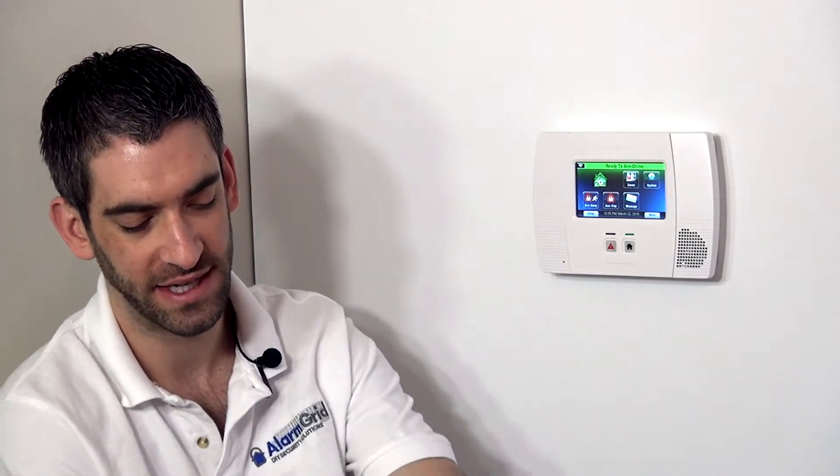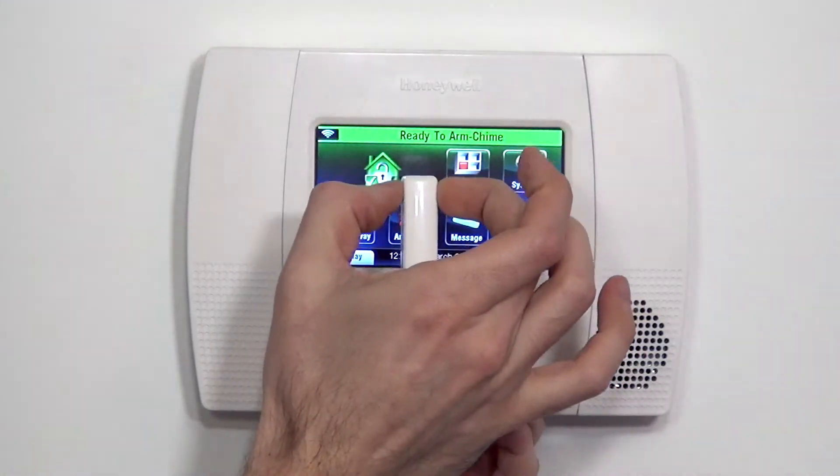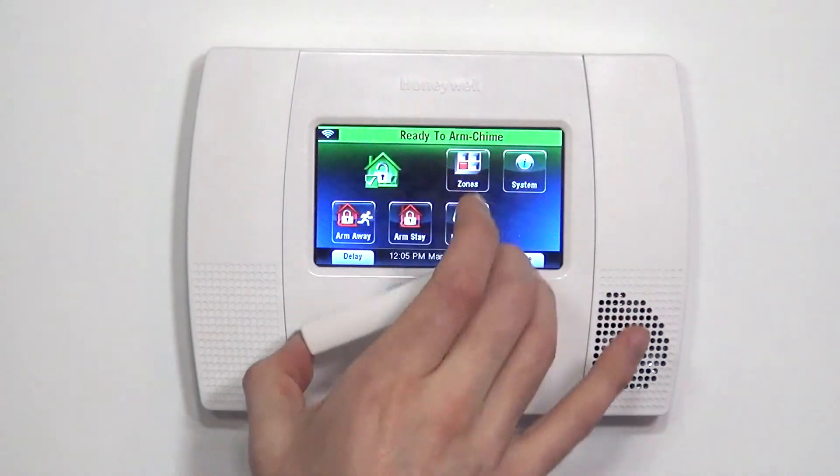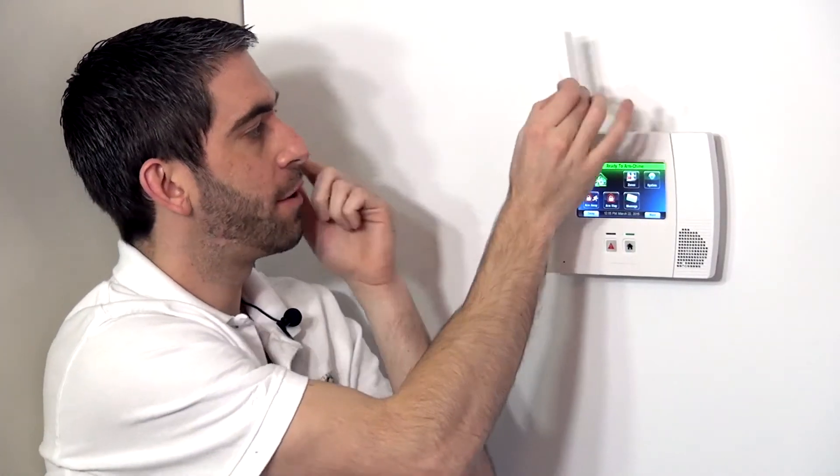If we open up this sensor, we can show you that unlike the 5816, which is bigger and boxier, or unlike the 5811, which is thin off the wall but has a wider footprint, the 5820L has this nice skinny frame so that if your window frame was very small, this would sit nicely without overlapping.